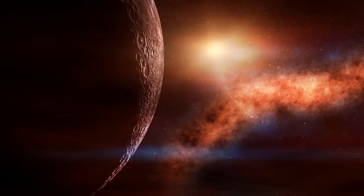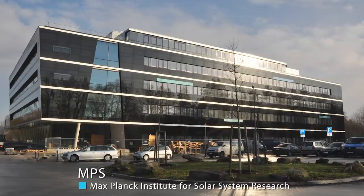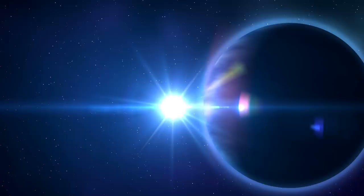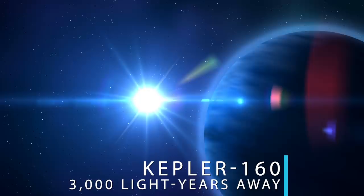But now researchers at the Max Planck Institute for Solar System Research in Göttingen, Germany and others from the US have announced that they have found a new exo-world less than twice the size of Earth which orbits a Sun-like star, Kepler 160, just over 3000 light-years from our solar system.